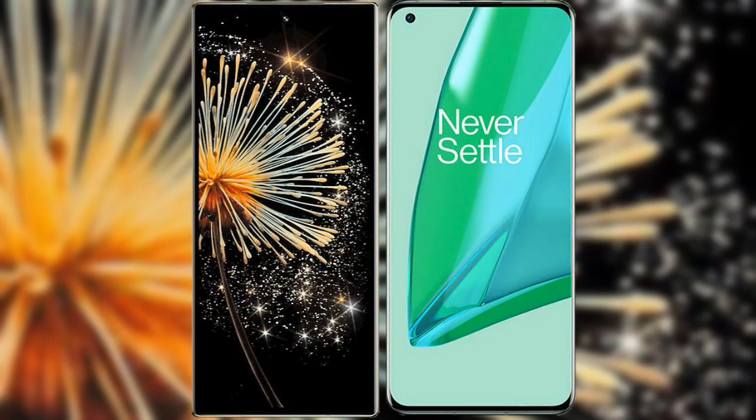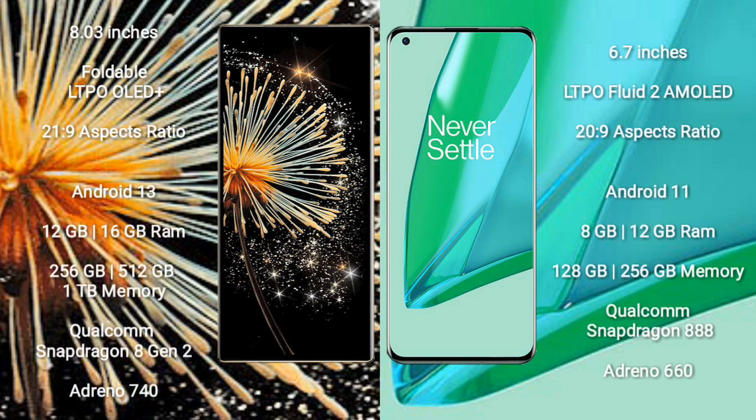I will compare the new Xiaomi Mix Fold 3 with the OnePlus 9 Pro. The Xiaomi Mix Fold 3 features an 8-inch foldable LTPO OLED Plus display with an aspect ratio of 21:9. The OnePlus 9 Pro comes with a 6.7-inch LTPO Fluid 2 AMOLED display and an aspect ratio of 20:9.